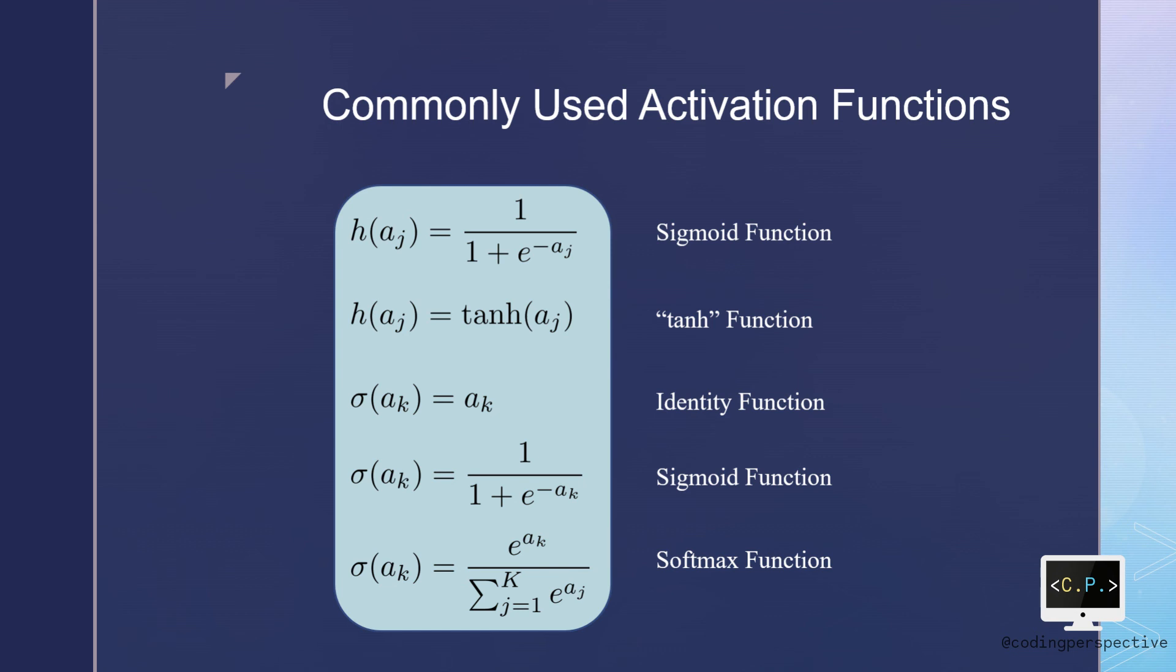Lastly, we have a function called softmax. It is called as e to the power ak divided by summation of e to the power aj's over k's.